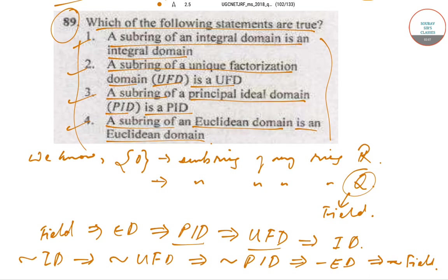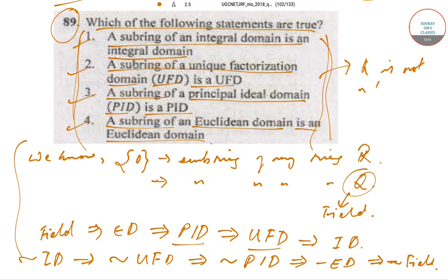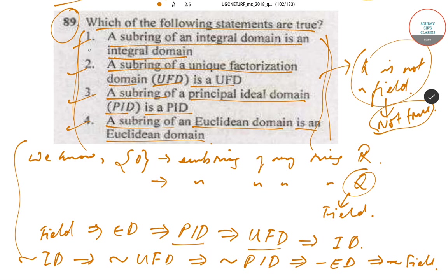In statements 1, 2, and 3, it has been said that the subring of an integral domain is an integral domain, the subring of a unique factorization domain is a UFD, and the subring of a principal ideal domain is a PID. And similarly, the subring of a Euclidean domain is a Euclidean domain. If we accept all four of these statements, they would imply that Q is not a field — but this is not true. That will imply that none of the given statements are true.